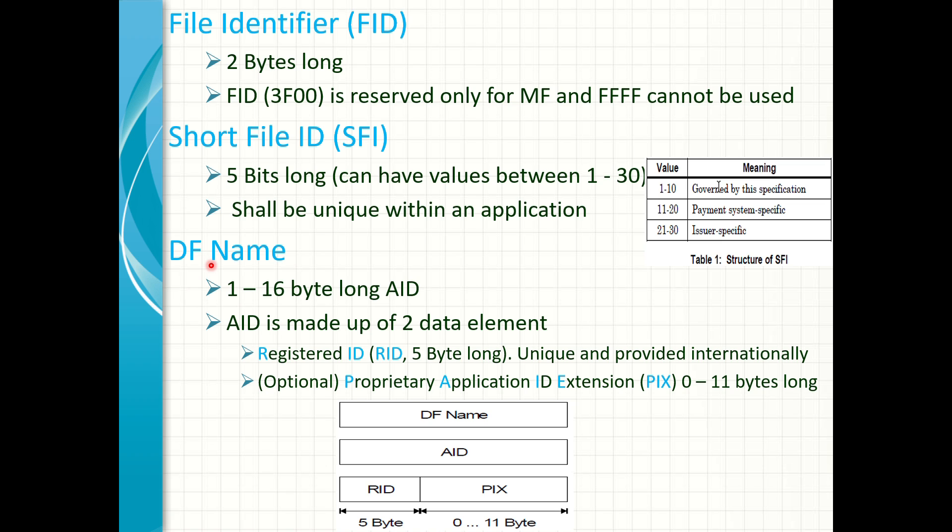A dedicated file name is also used as an application ID. It has a length between 1 to 16 bytes. It is made up of two main ISO data elements. A registered ID which is 5 bytes long.